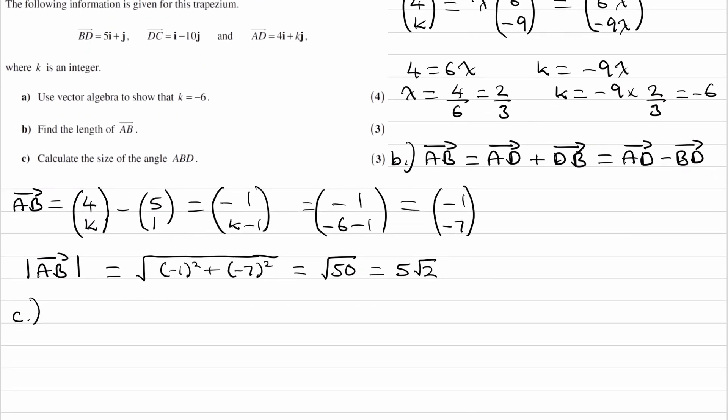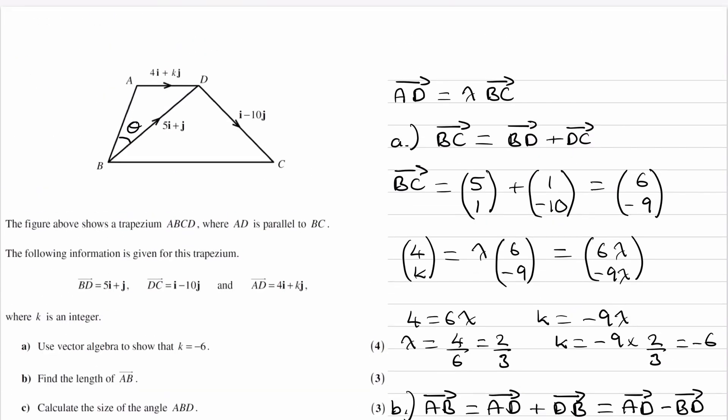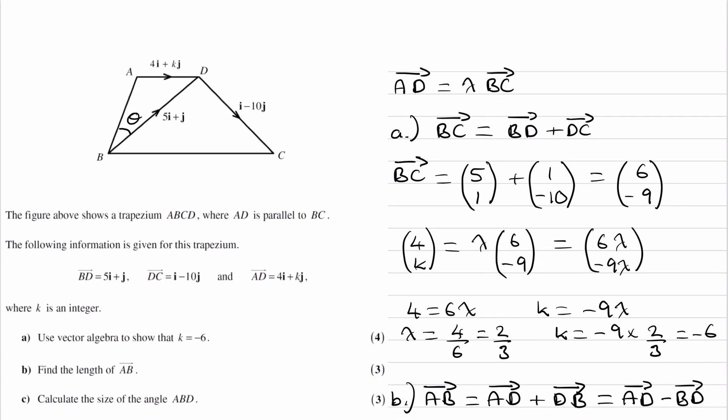We've already worked out what AB is. We know that AB is 5 root 2. So maybe what I'll do is I'll draw that on my diagram. So this length here is 5 root 2. Let's work out the other length. So let's work out what AD is. AD is 4K. K was minus 6.